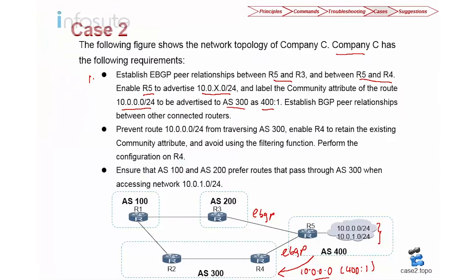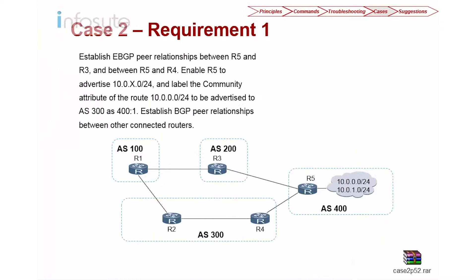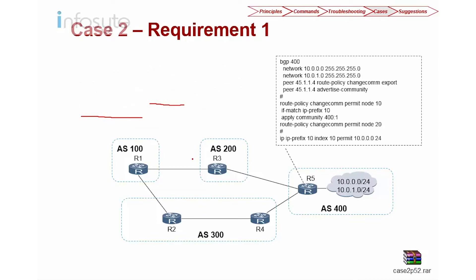The solution is straightforward. We are going to do marking based on 10.0.0.0 advertised to AS400 and then advertised to AS300 using a 400:1 community. We create the IP prefix of '10' and match 10.0.0.0/24. Once we create the IP prefix, we create a policy named 'change community'. We match based on the prefix, apply a community of 400:1, and finally permit the rest.